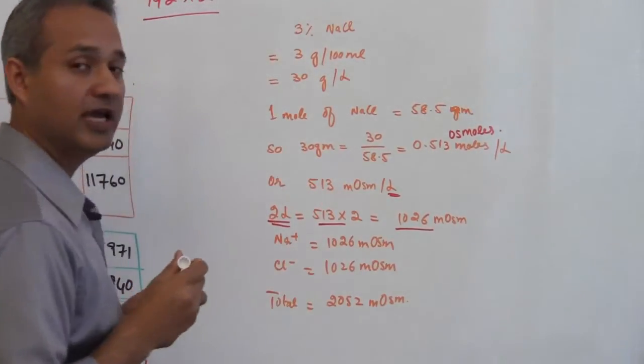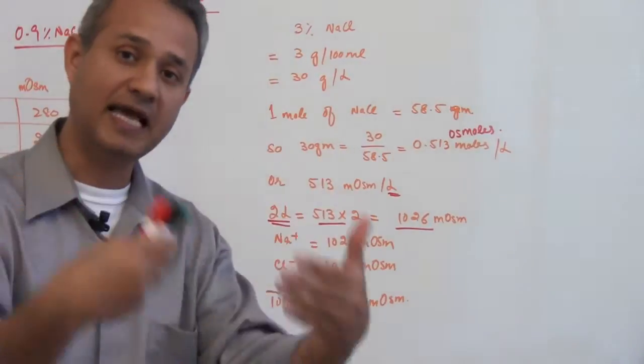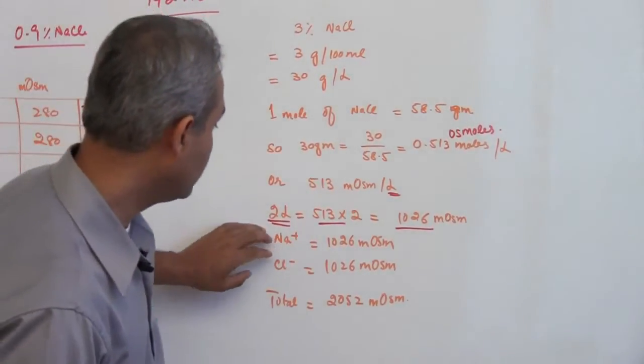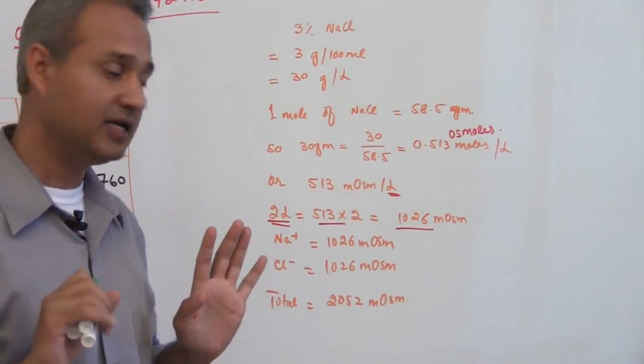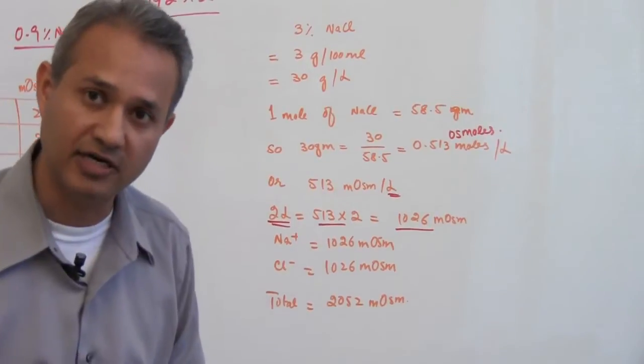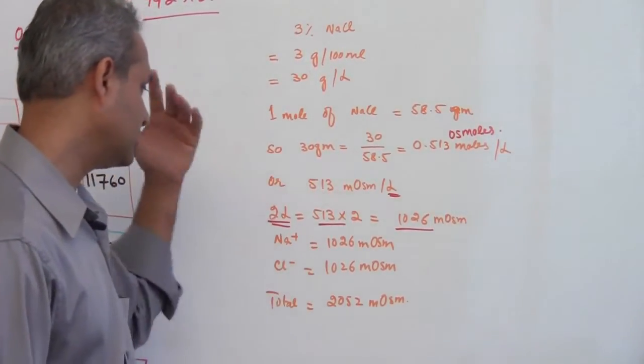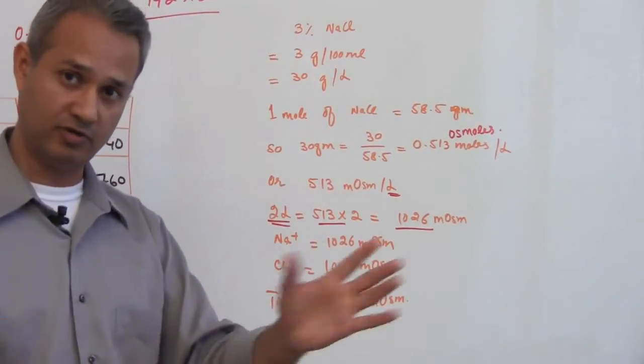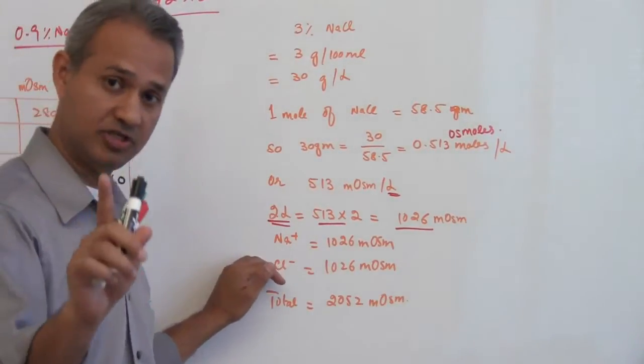We have seen this before that when sodium chloride is added to the solution, it is going to separate into sodium and chloride. About 93 percent of that separates, but for our example we will say 100 percent of sodium and chloride would dissociate. Remember we are talking concentrations.